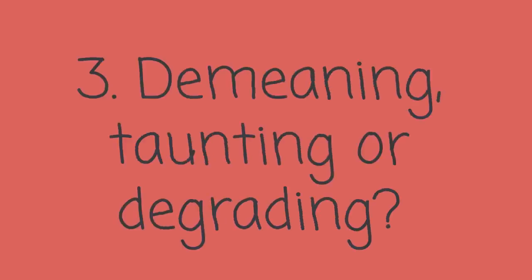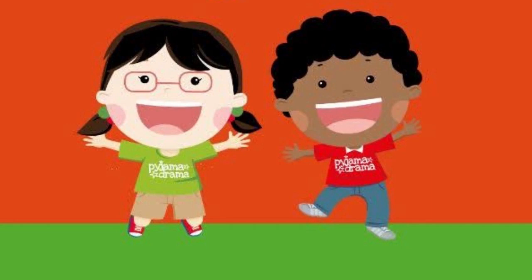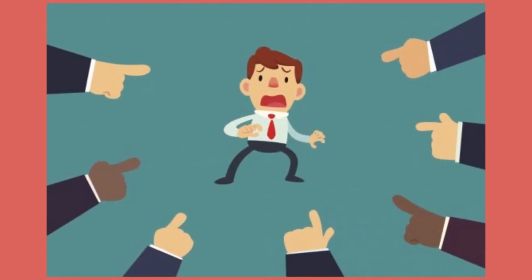Avoid demeaning, taunting, and degrading language. Children learn by their family's tone. They will talk the same way with others. Point out how their behavior affects others. Let them know how they hurt everyone.